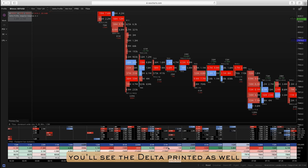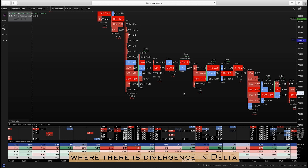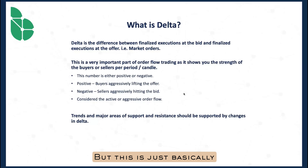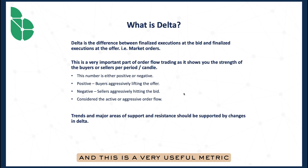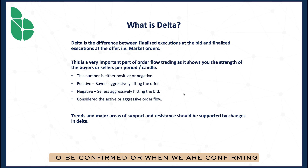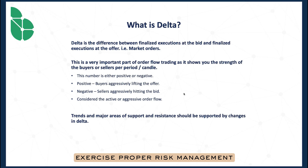Down here you'll see the Delta printed as well. This will be useful because when we're approaching the high of a range, we would likely see Delta begin to taper off. When approaching the bottom of a range, we'd likely see Delta begin to increase. This leaves out occurrences where there is divergence in Delta — we'll have a separate video for that because it's a very important sign. But this is basically what Delta is: aggressive orders hitting the bid versus aggressive orders lifting the offer — the difference between those two values. If it's positive, buyers are in control; if it's negative, sellers are in control. This is a useful metric for identifying areas of support and resistance and confirming trends to the upside or downside. So that's that, guys. This is Ryan with Block Roots — exercise proper risk management and trade effectively.